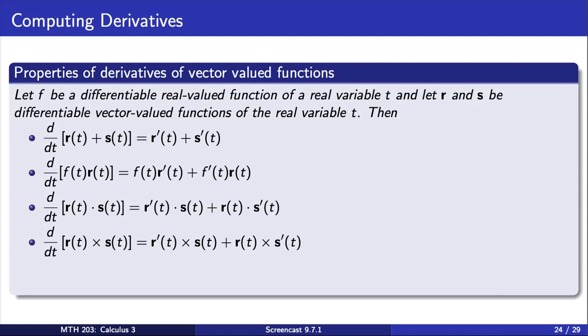For example, recall the dot product gives us a scalar, while the cross-product gives us a vector. Lastly, we see that the chain rule for the composition of a vector-valued function with a scalar function applies.